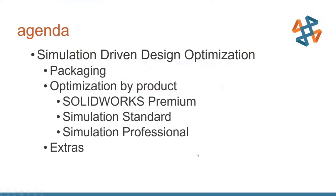Just a little bit of an agenda while we're getting started. I want to start off by talking about the packaging — what comes with these different simulation levels — and then we're going to go through a demonstration of what kinds of optimizations you can do with just your SOLIDWORKS Premium license, your CAD Premium license, and then we'll start getting into the simulation licenses in earnest with Simulation Standard and Professional. And I have a few little extras and tidbits I like to cover at the end.